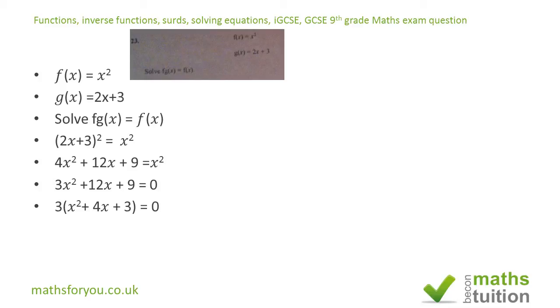Next we need to factorize this, and then we end up with 3(x + 1)(x + 3) = 0, which means that x can be minus 1 and x can also be minus 3. That makes sense.